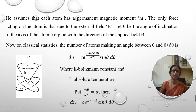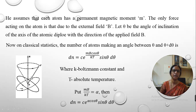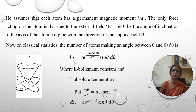Here I have given the diagram showing how Larmor precession is going to take place for the atom when it is subjected to an external magnetic field. This is the axis of the dipole, inclining with reference to the external magnetic field. This figure refers to one atom. If we consider N number of atoms present in the specimen, each atom will be inclining with a different inclination.